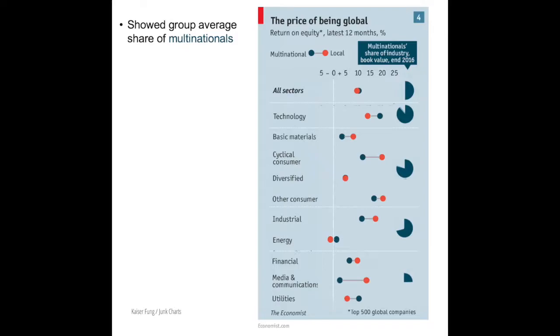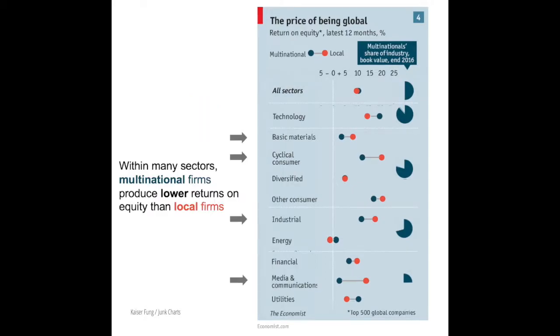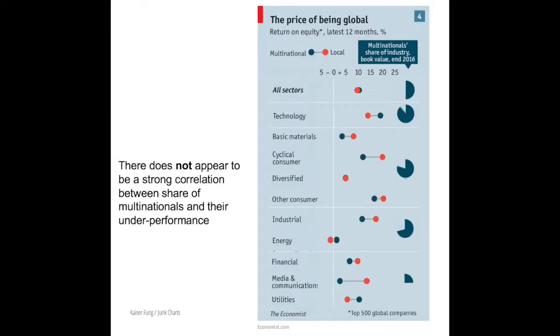Given how closely those industries cluster, we could replace the individual pie charts with one pie chart for each industry group. This move involves a trade-off — I'm trading off precision, going from individual pie charts to aggregate pie charts, in order to gain clarity. In this final graphic, we have answers. In aggregate and in the technology sector, there is no price for being global. The next industry group, including basic materials, diversified, and consumers, there is indeed a price to pay for being global. The other sectors show mixed results. So if there is a price, the price is not high.